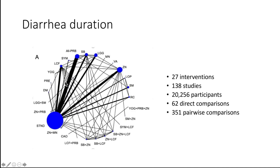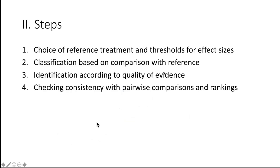This is the network geometry. There were 27 interventions — a complex network — 138 studies, over 20,000 participants, some 62 direct comparisons, and 351 pairwise comparisons. We chose this complex example to show that this approach can be done even in such a setting. The outcome is a continuous outcome.